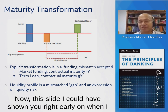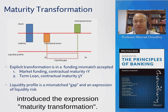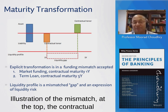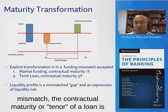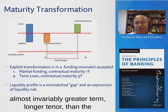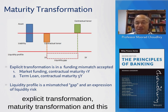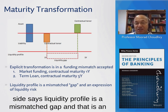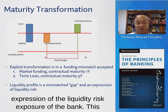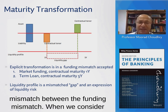This slide I could have shown you right early on when I introduced the expression maturity transformation — as an illustration of the mismatch. At the top, the contractual mismatch: the contractual maturity or tenor of a loan is almost invariably a longer tenor than the contractual maturity of the deposit. So that gives us an explicit maturity transformation and this gap profile. The second bullet point on the right-hand side says liquidity profile is a mismatched gap, and that is an expression of the liquidity risk exposure of the bank — this mismatch, the funding mismatch.